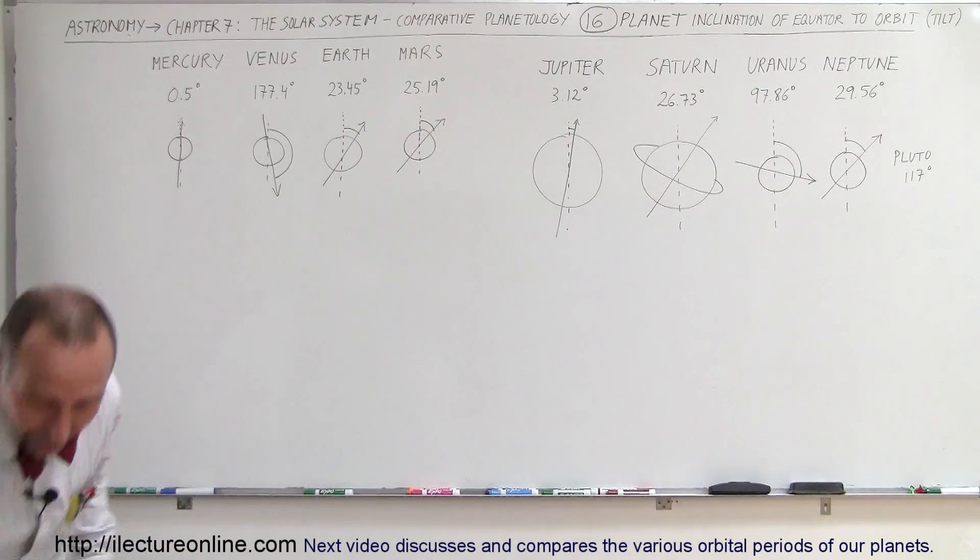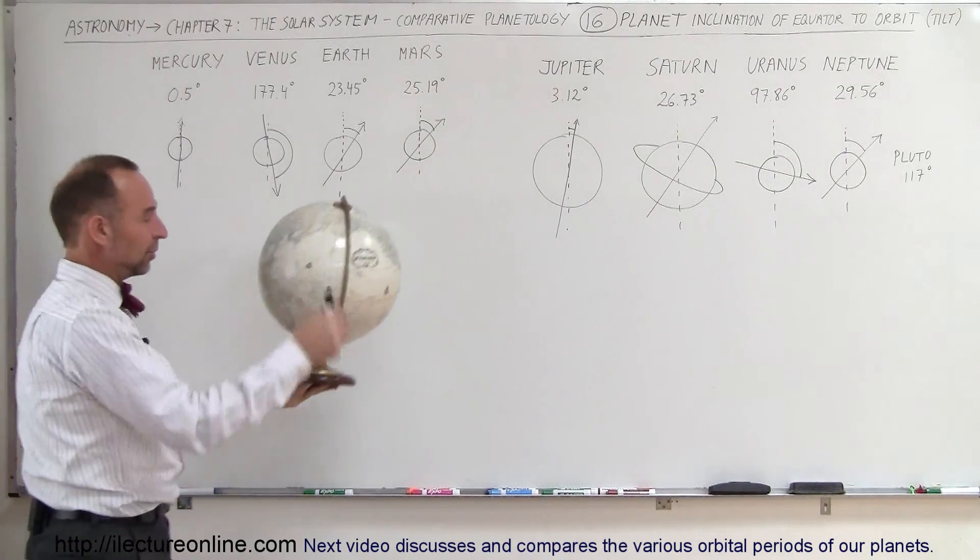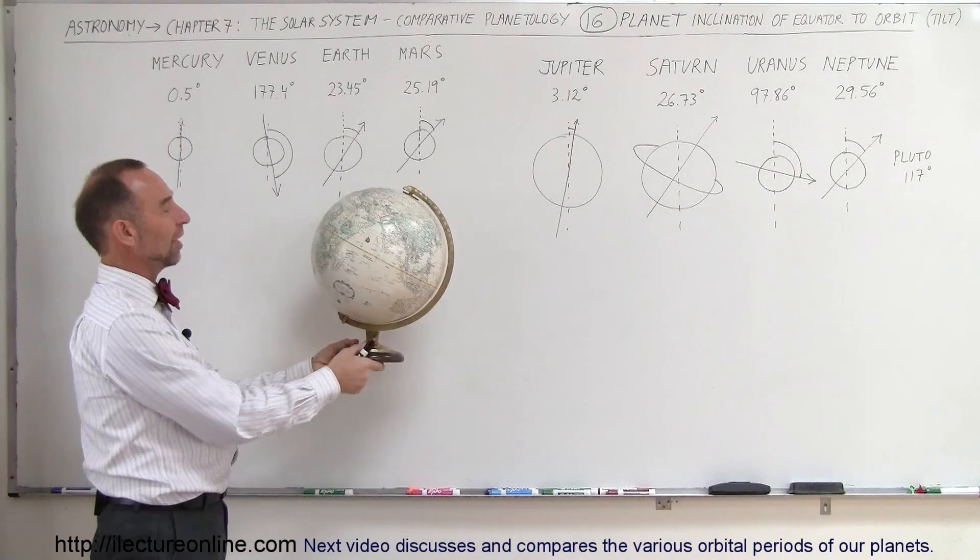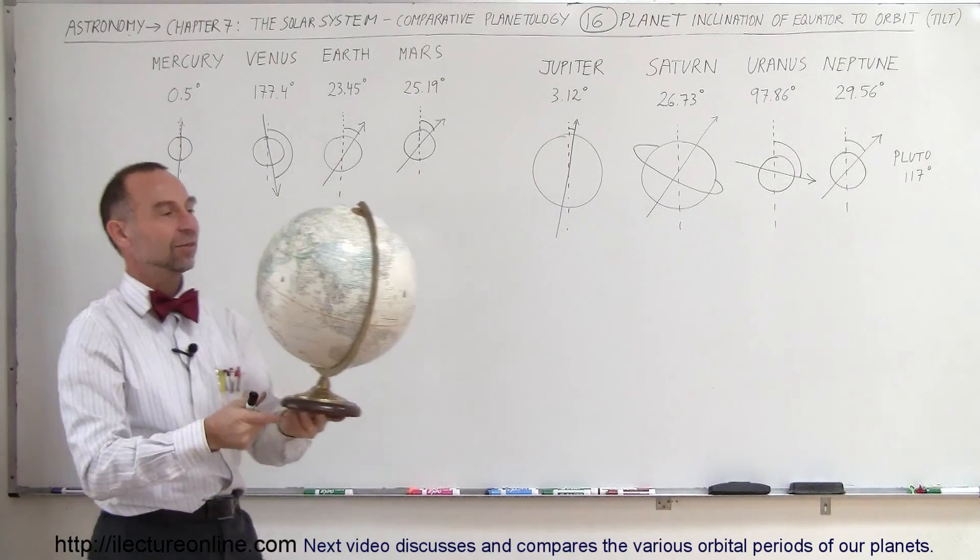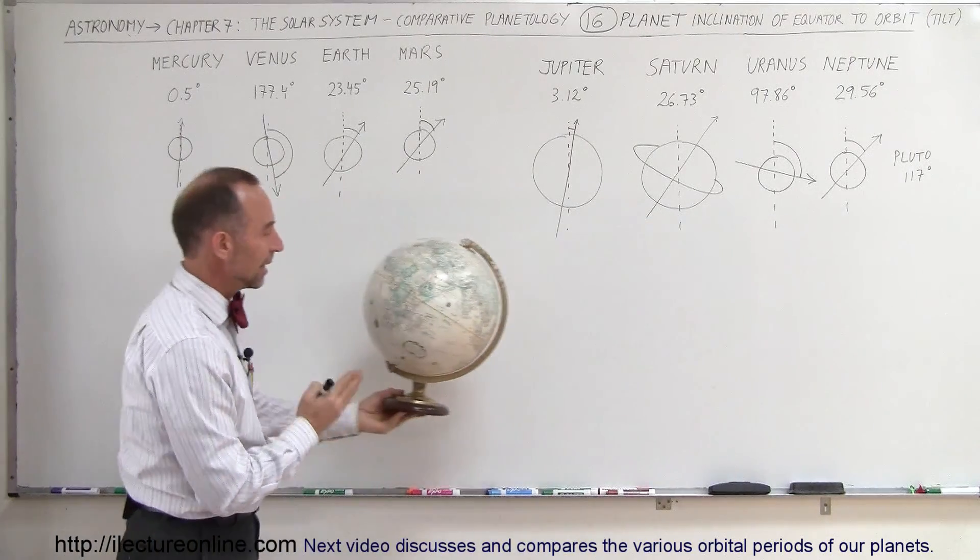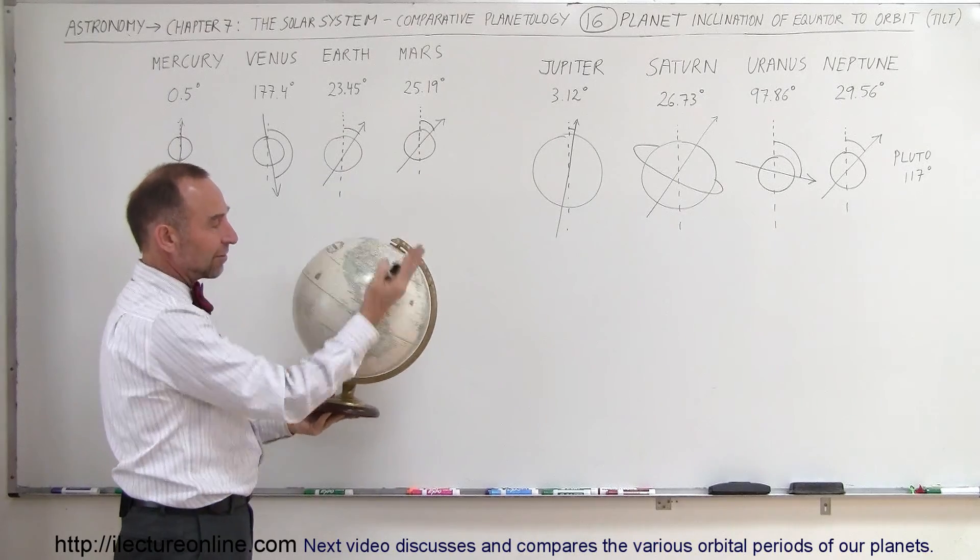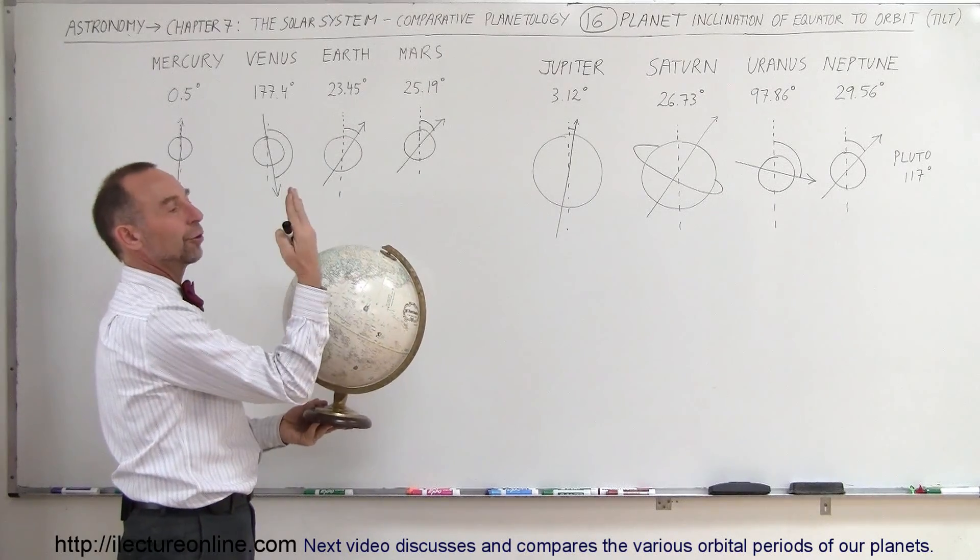For example, I have a globe right here. This is a good representative of the Earth. Notice as the Earth goes around the Sun like this along its ecliptic plane, the axis about which the Earth rotates is tilted relative to the vertical.